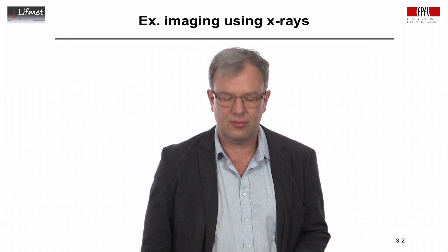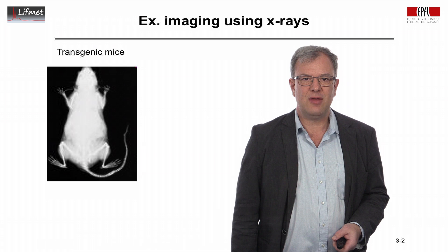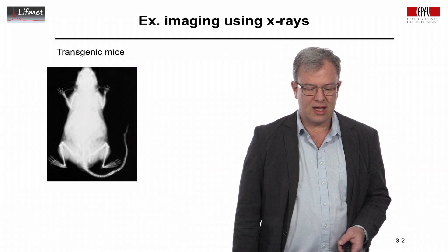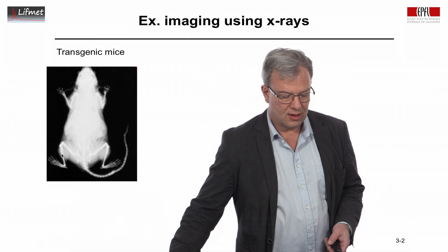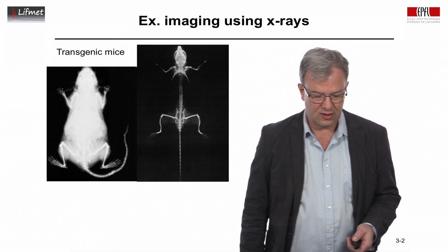So for today I would like to start with a few examples to show you what kind of images one can obtain with X-ray imaging. Let's start with the first image, this is a transgenic mouse, a fairly general X-ray image. We can see here absorption throughout the body and we can also discern the legs of the mouse.